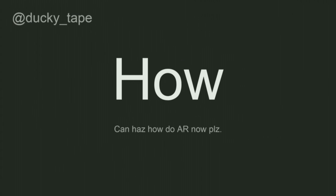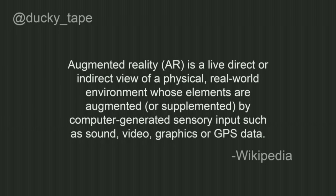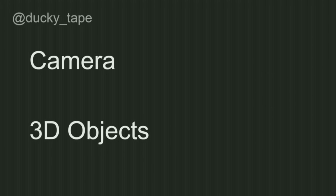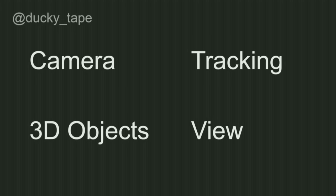The important part is how. How do we actually get a thing, look at a thing, and see a different thing on the screen? Going back to the definition, you need four things: a camera for the live feed, the real-world environment input, a way to display the camera, something you want to put on it, tracking to find out where to put that object, and a view that ties it all together.